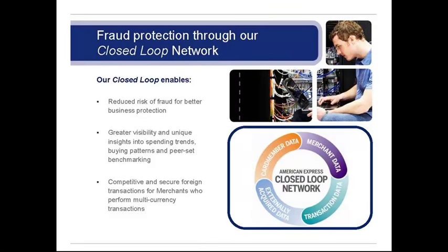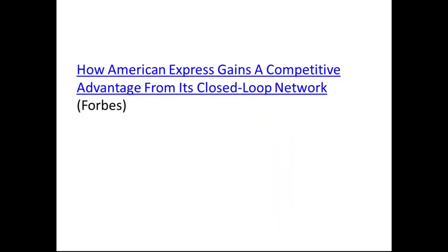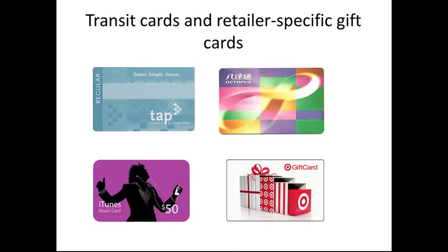If you're interested in the Amex model, there's an article by Forbes that contrasts Amex with Visa and closed-loop versus open-loop in terms of the business proposition and model. At a smaller scale than American Express, most transit cards and retail-specific gift cards are closed-loop cards. You can only use them at specific stores, for specific items, or specific modes of transit — like this Octopus card for the Hong Kong transit, the LA Metro's transit pass, an iTunes card, or a Target gift card. You can only use the iTunes card at the iTunes store, and the Target card at Target. There's a closed loop between you and the merchant through this closed payment network.